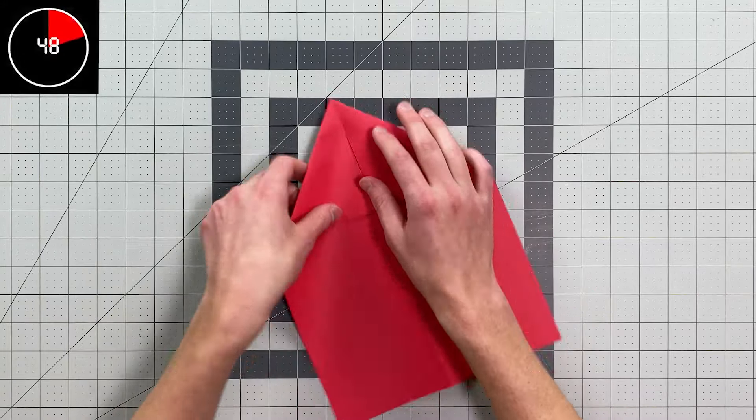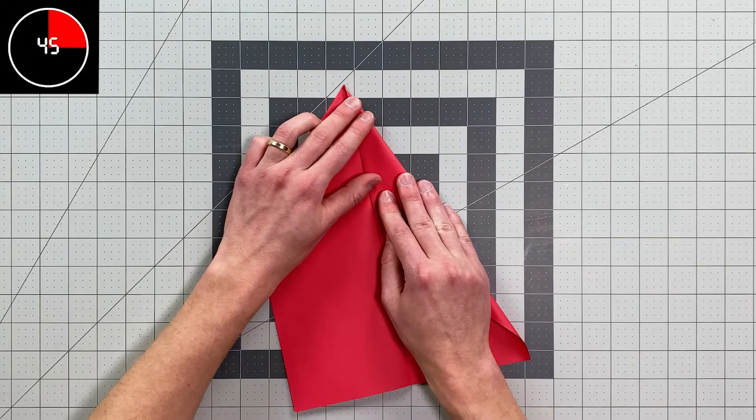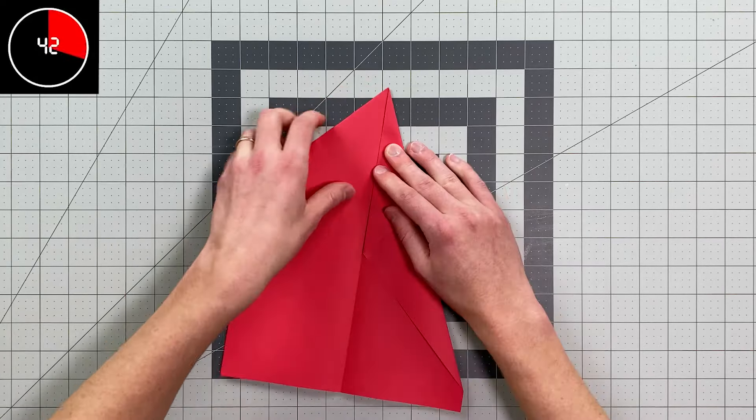Then you can flip that over and fold those diagonal edges into your center crease now, on this side, just like this.